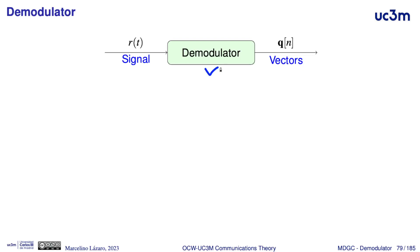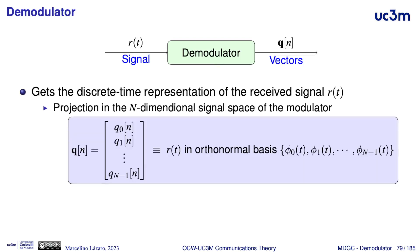The demodulator processes the received signal at the output of the channel to convert it into a sequence of vectors. These vectors contain the discrete-time representation of the received signal R. Therefore, at any discrete instant n, we will have an n-dimensional vector with n coordinates of the received signal in the orthonormal basis used in the transmitter, with dimension n in general.